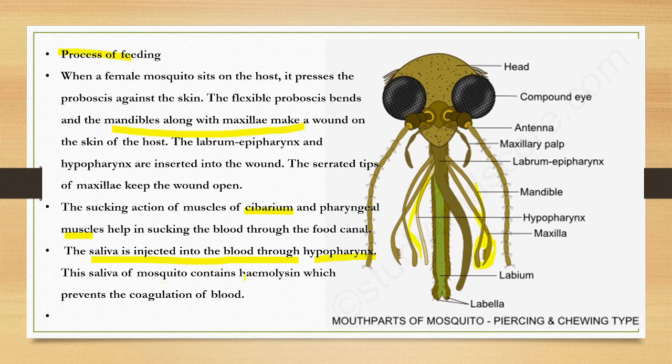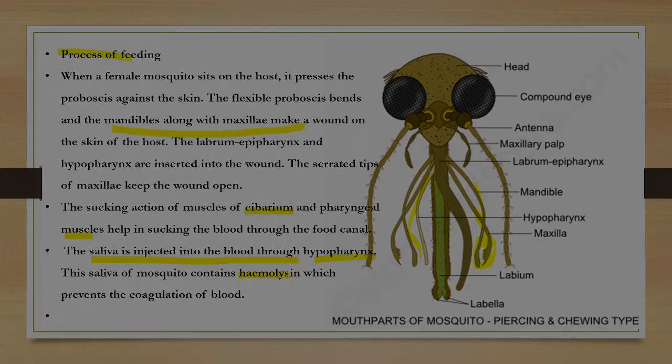In the saliva there is an anticoagulant called hemolysin, which prevents the coagulation of blood. This is all about the mouthparts of different insects.